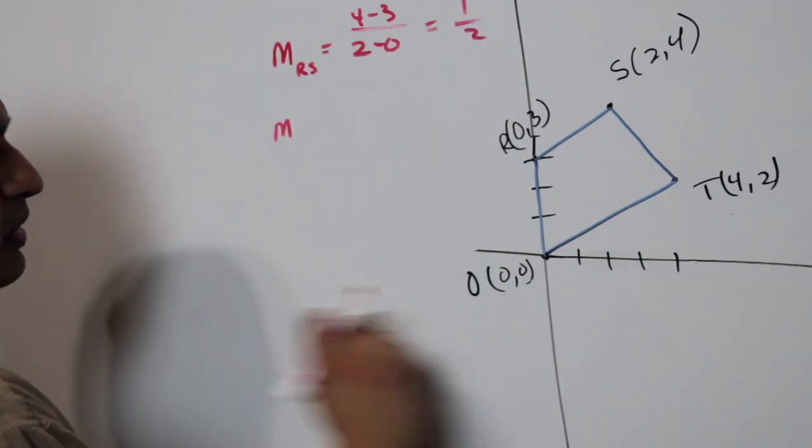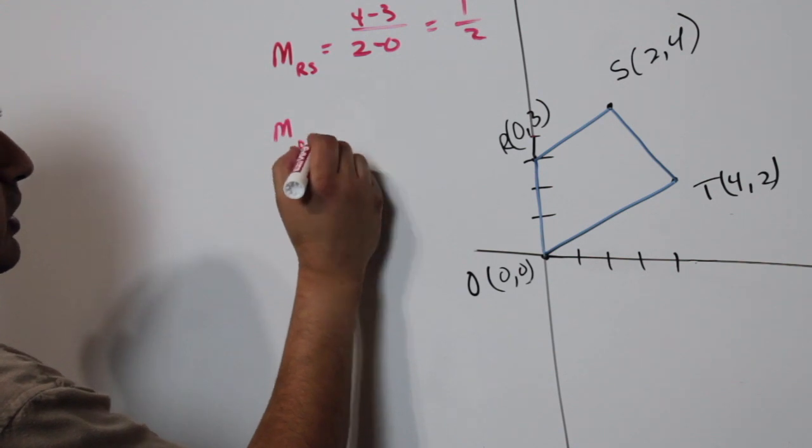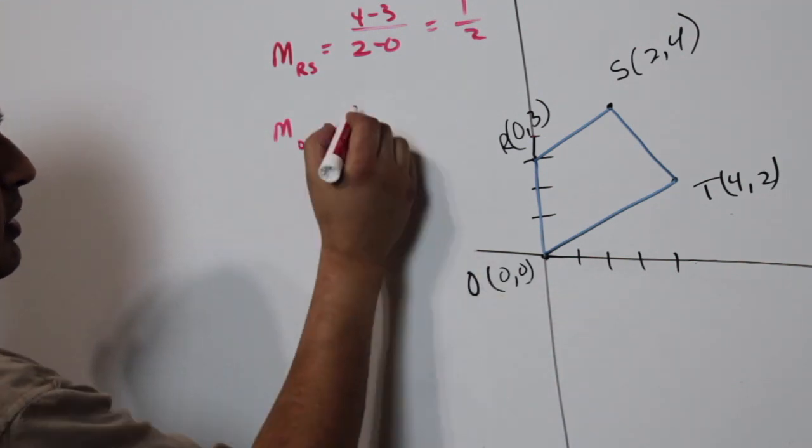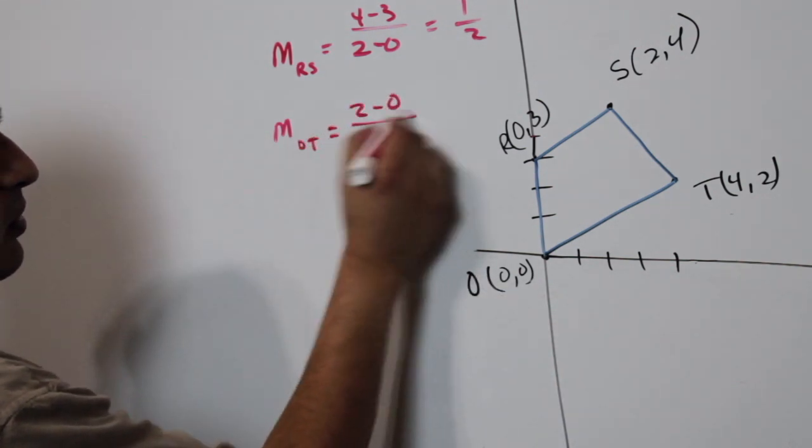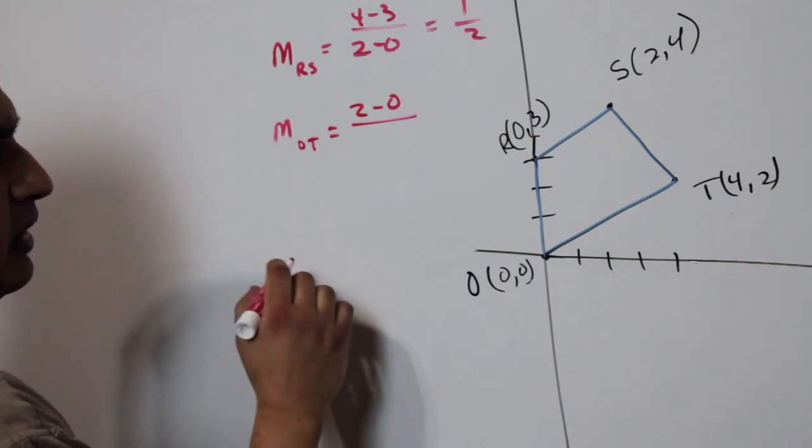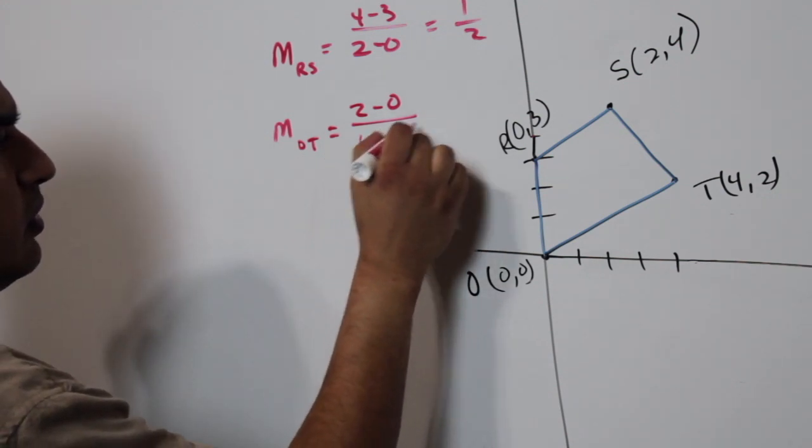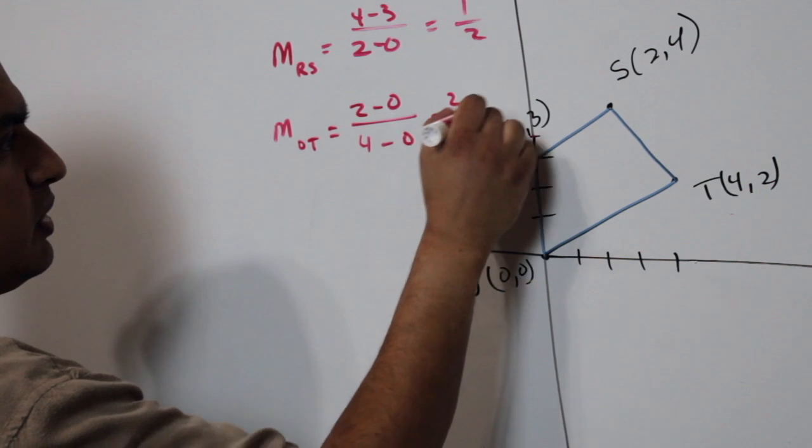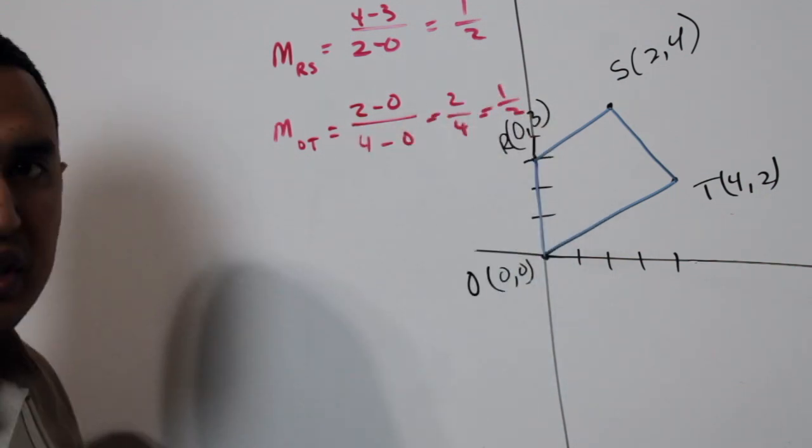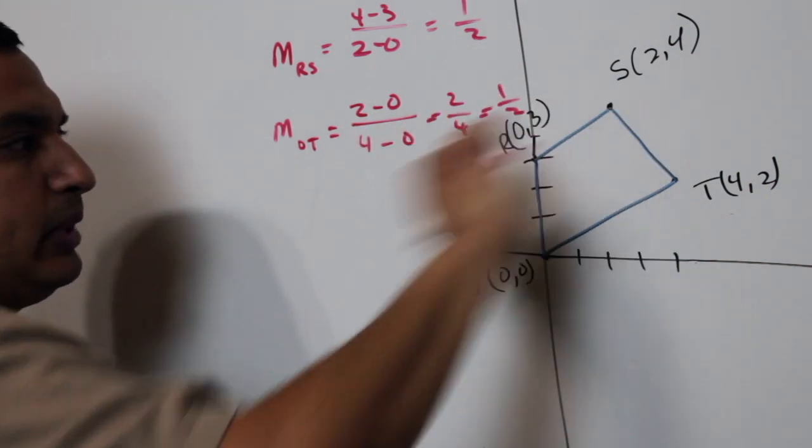All right, then I want to look at the slope of ot. Okay, and same thing. It's going to be 2 minus 0 and then 4 minus 0, which is 2 fourths, which does reduce to 1 half. So, I know my two bases are parallel.